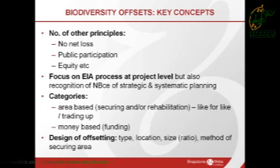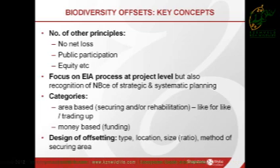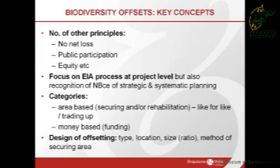There are a number of other principles. The BBOP has about ten principles, which are very similar to what's in the provincial guidelines. The provincial guidelines have a focus on the EIA process at project level, but there's also recognition of the importance of strategic and systematic planning. In terms of offsets, you have area-based approaches looking to secure and/or rehabilitate either like-for-like areas or trading up, where you offset in an area that has higher conservation value. The guidelines also provide guidance on the type, location, size, and methods of securing an area.